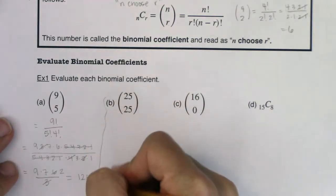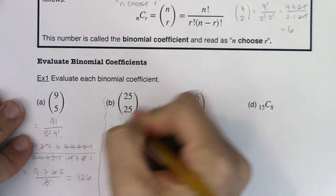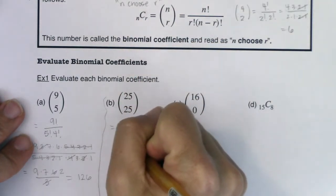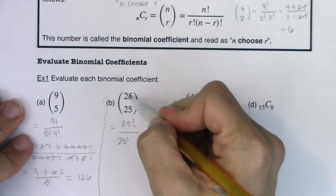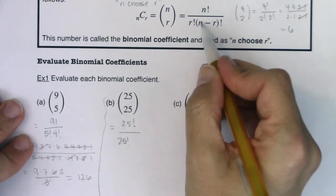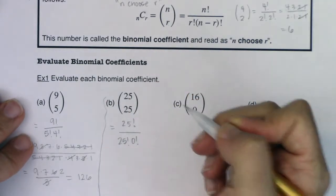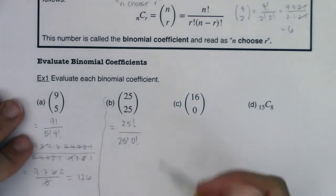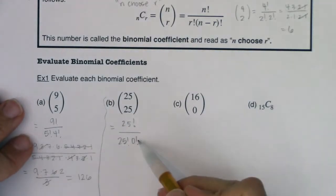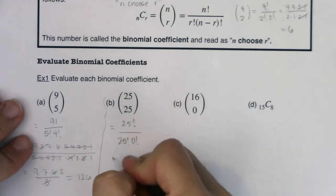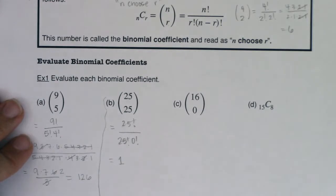Let's try 25 choose 25. The formula gives 25! over 25! times 0!. The 25 factorials cancel, and since 0! equals 1, this whole expression equals 1.